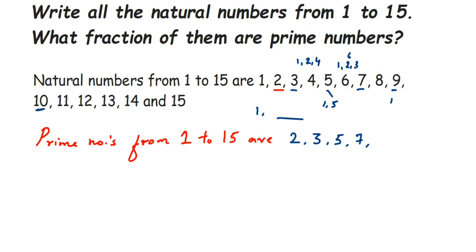11 is a prime number — it counts only in the 1 table and 11 table. Then 12 is not a prime number; it goes in 1, 2, 3, 4, 6, and 12. 13 is a prime number because it comes only in the 1 table and 13 table. 14 is not a prime because it comes in 1, 2, 7, and 14. Then 15 is also not a prime number because it comes in 1, 3, 5, and 15.